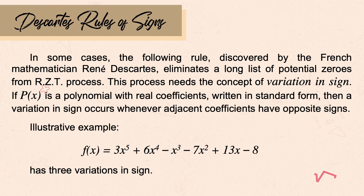If p of x is a polynomial with real coefficients written in standard form, then variation in sign occurs whenever adjacent coefficients have opposite signs. For example, f of x equals 3x to the 5th power plus 6x to the 4th power minus x cubed minus 7x squared plus 13x minus 8 — we have here 3 variations.